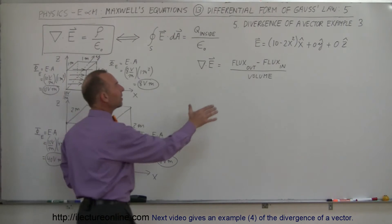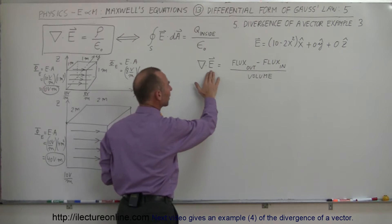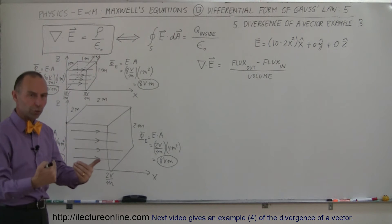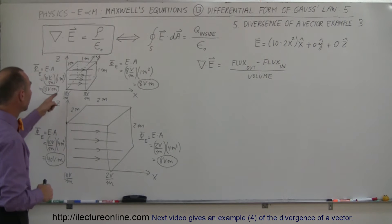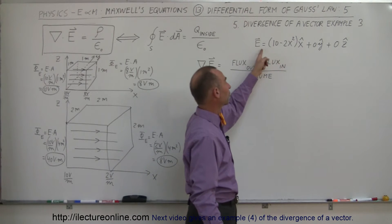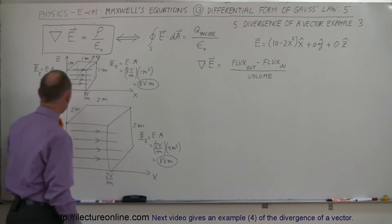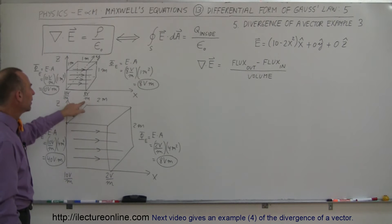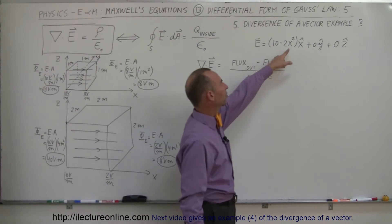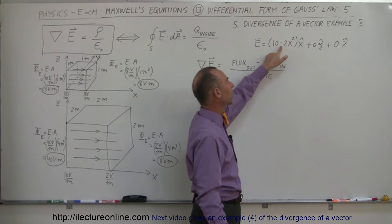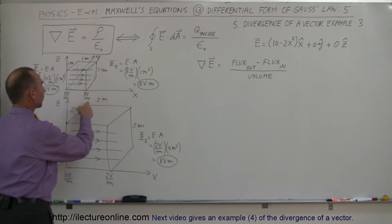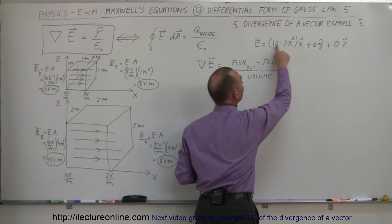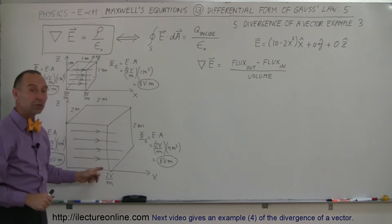We're going to find the divergence of the electric field in both volumes and see if they're different. Based on the equation, when x equals 0, the electric field is equal to 10 volts per meter. So at the origin it's 10 volts per meter. But 1 meter away, when x equals 1, 1 squared is 1, times 2 is 2, 10 minus 2 is 8 — so the electric field strength will be 8 volts per meter. And 2 meters away, 2 squared is 4, times 2 is 8, 10 minus 8 is 2 — the electric field strength is only 2 volts per meter.